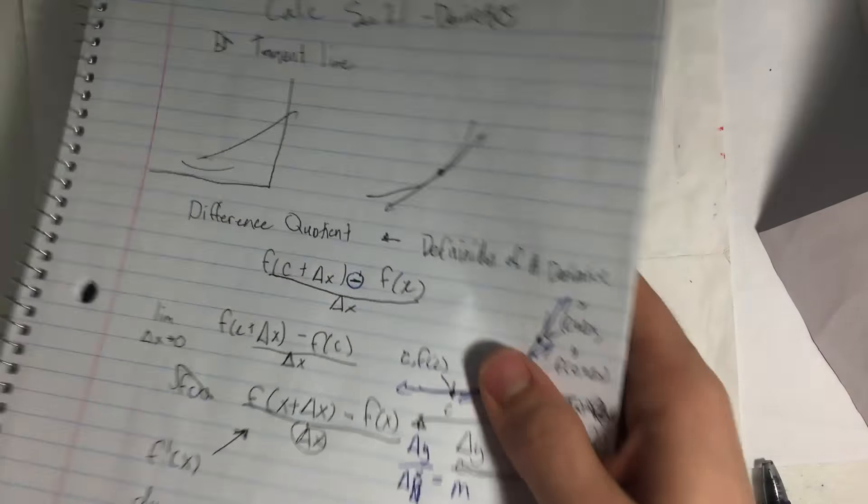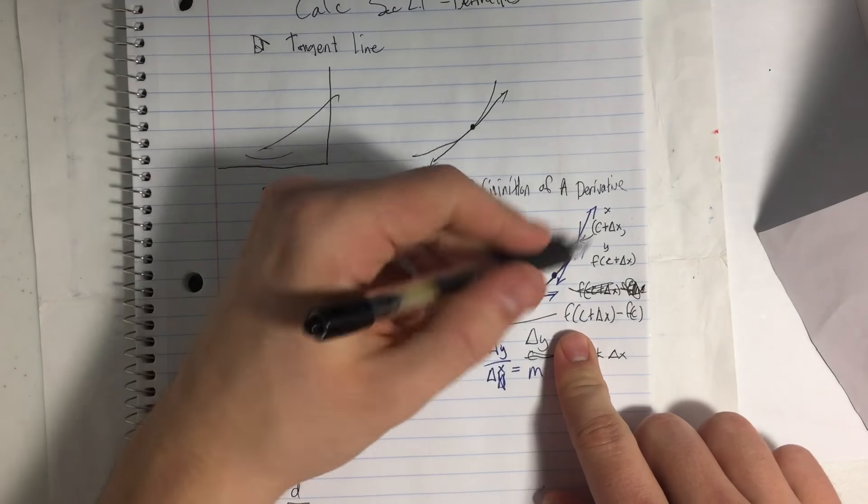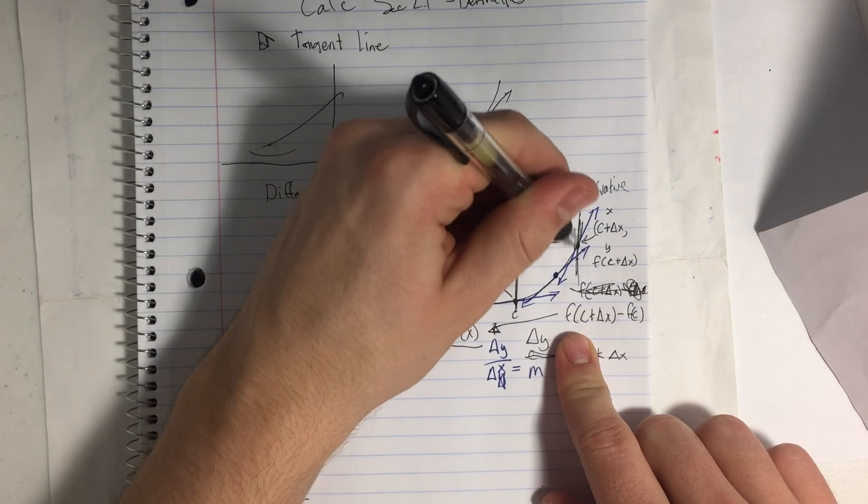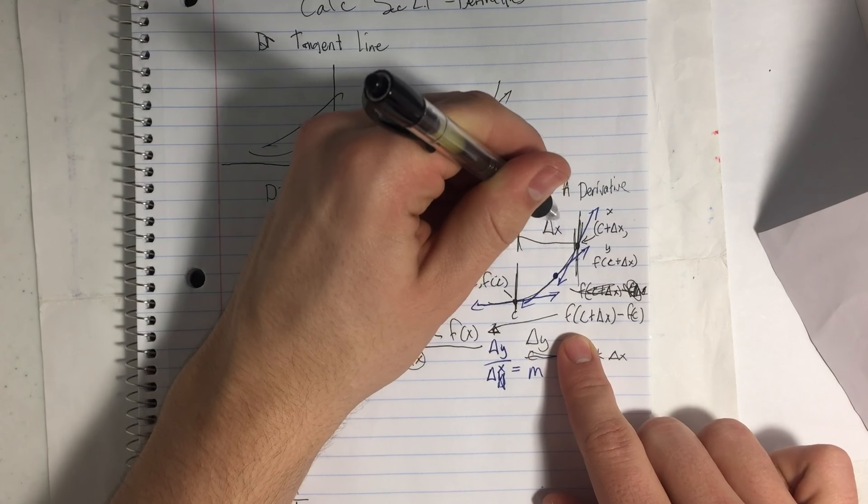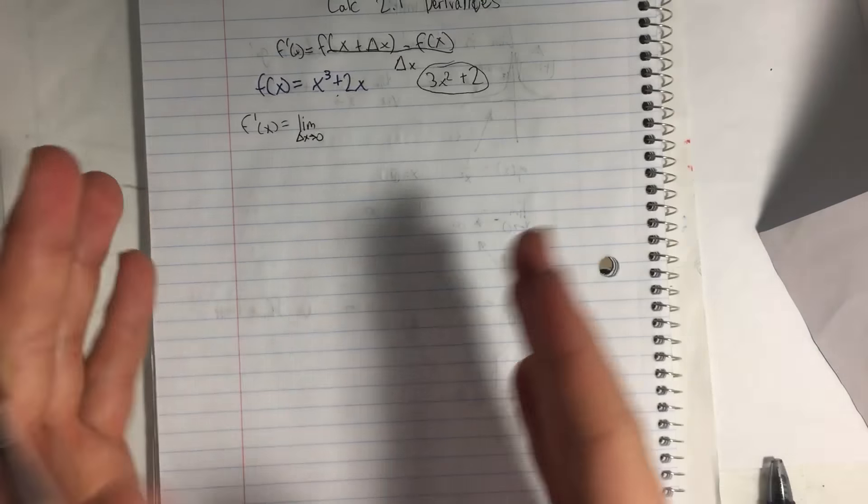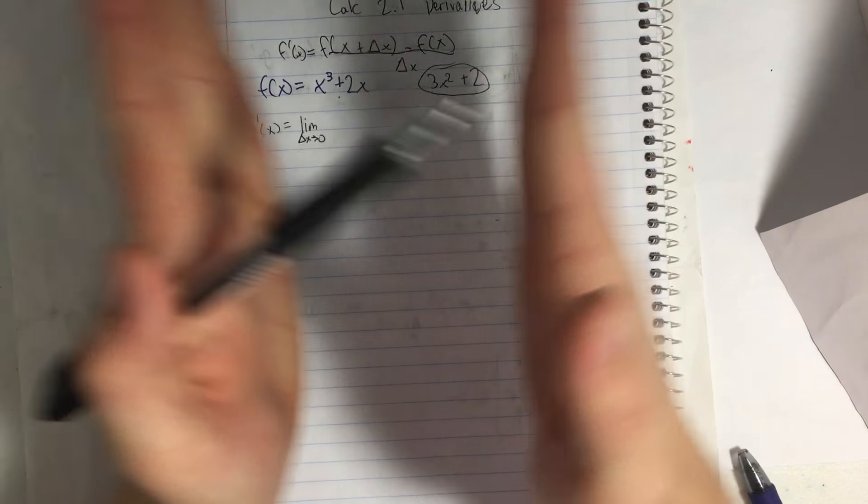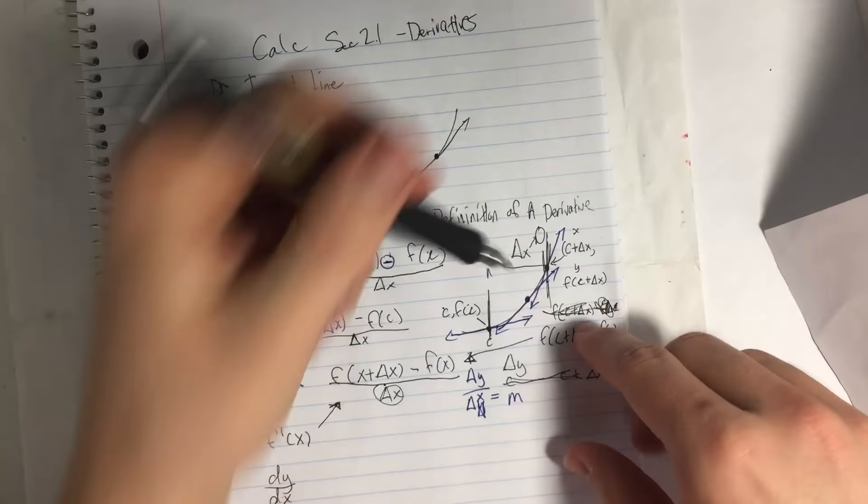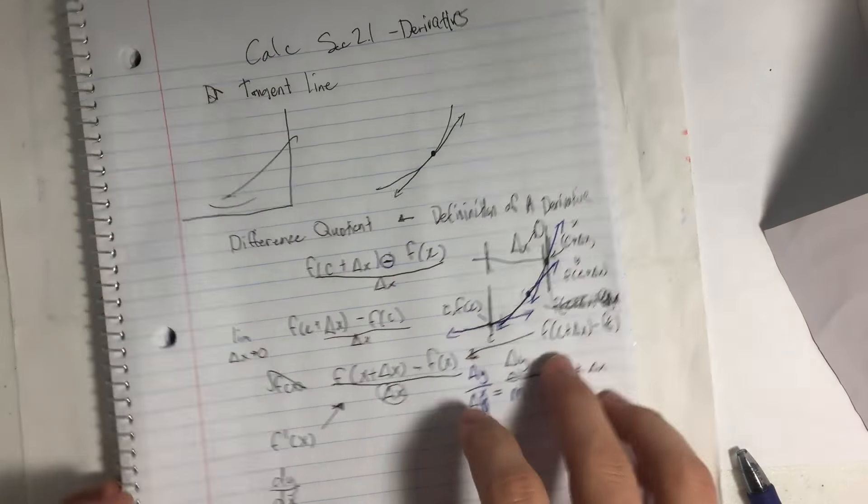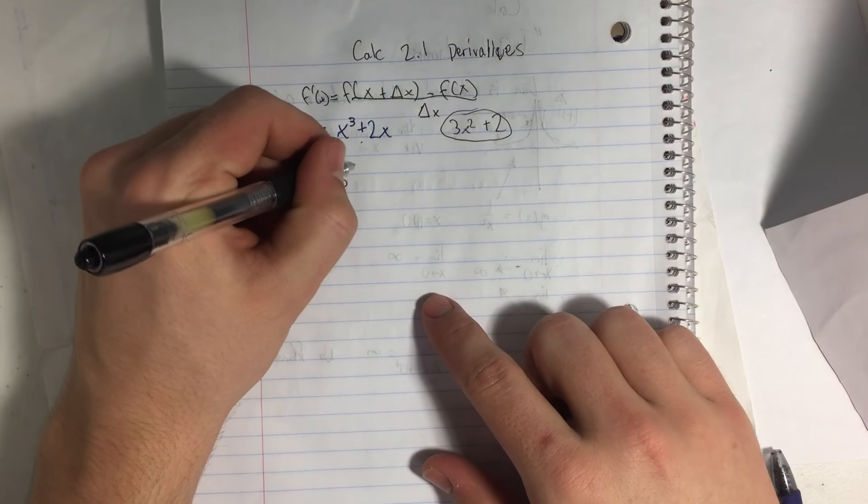So f'(x) equals the limit as Δx approaches 0. So basically, if we go back to yesterday's, as this distance from c to this, this is Δx, right, as this number moves to 0, where does this get to? So that's making it, getting the c and the Δx point infinitely close together to a point where it's one point, if we remember back to limits.